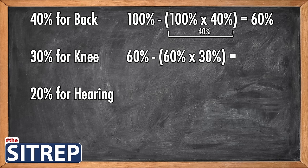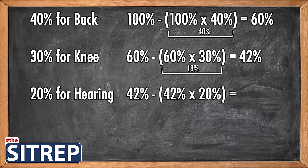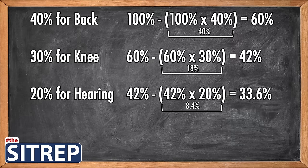With the knee, we start with the remainder, which is 60%. Much like the equation above, 60% minus the sum of 60% times 30%, which is 18%, equals a remainder of 42%. We continue this process for hearing, beginning with the remainder from the previous line: 42% minus the sum of 42% times 20%, which is 8.4%, gives us a remainder of 33.6%.